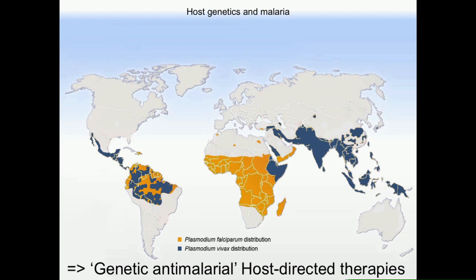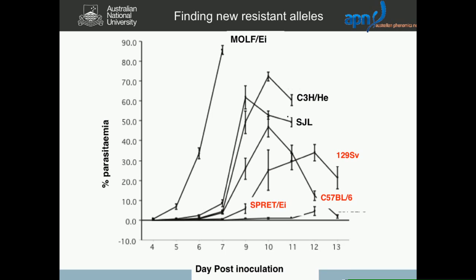So the idea is to try to find new genes to reproduce what I would call genetic anti-malaria, and this is called in the field host-directed therapy. To do this, I use mice, and like in the human population, mice are more or less susceptible to the malaria parasite. These mice in black are more susceptible, and these mice in red are more resistant.